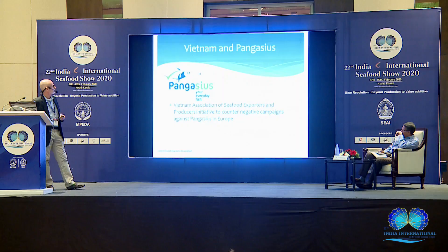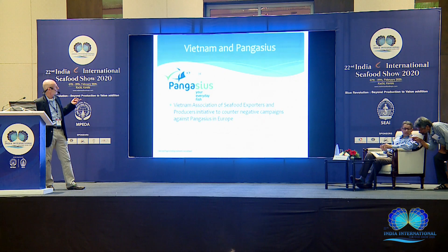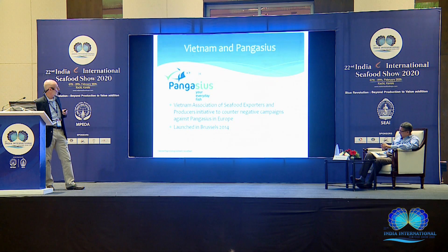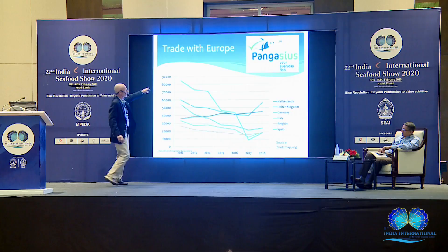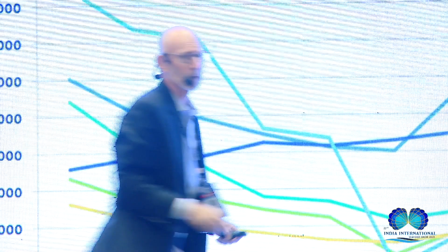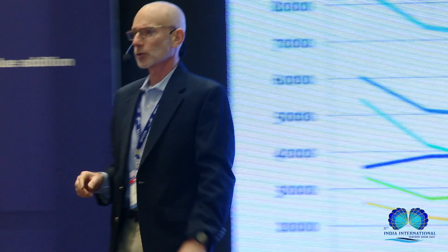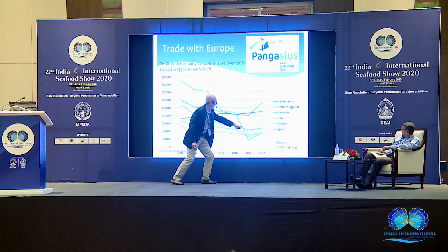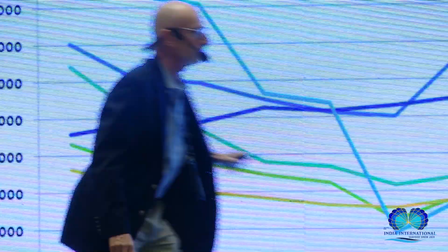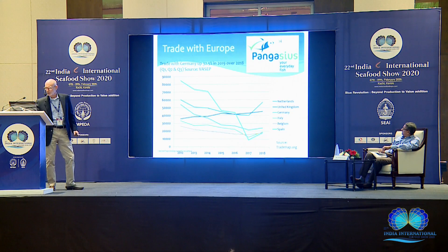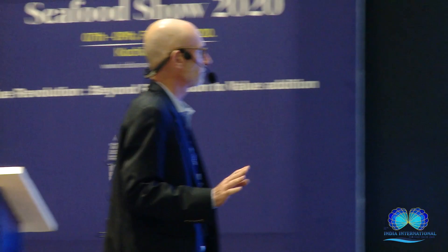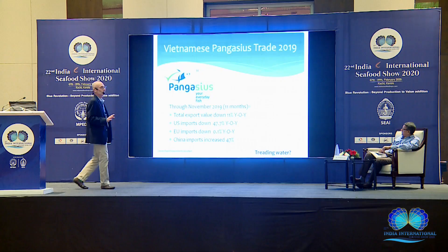Another national marketing program is Pangasius — 'your everyday fish' — established by the Vietnamese VASEP Association representing exporters and producers. It was a counter-campaign to negative press for Pangasius in Europe, launched in 2014, with websites in various languages — but notably not in Chinese. The sales data shows why they had to develop it: sales went down, and even after 2014 they continued to go down, with only a slight recovery in 2018. Through 11 months of 2019, total export value was down 11%, U.S. imports down 47%, EU imports down 1.1%, while China imports increased 47%. They're treading water, and I don't know if we can say it's successful — the website isn't even in Chinese.